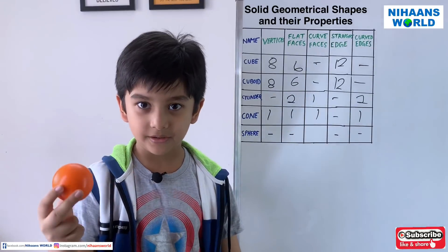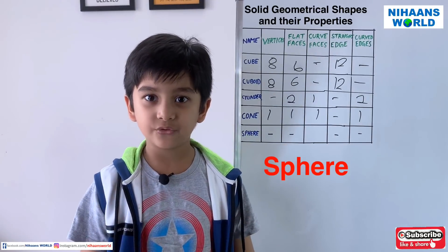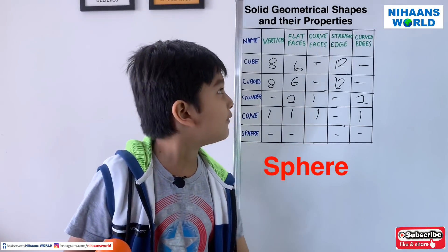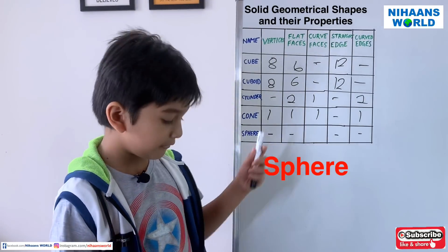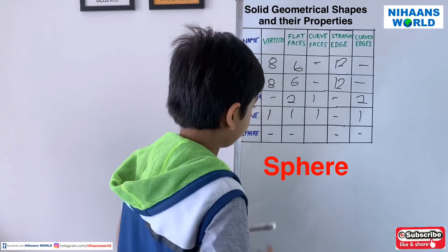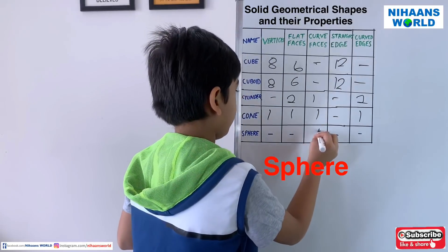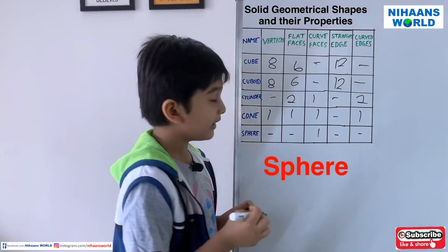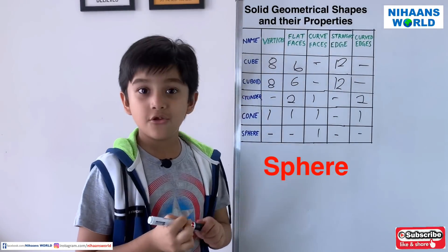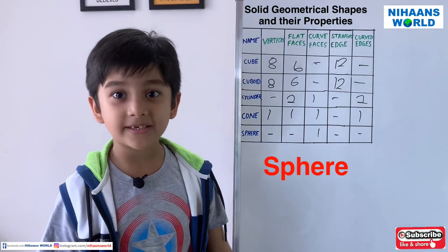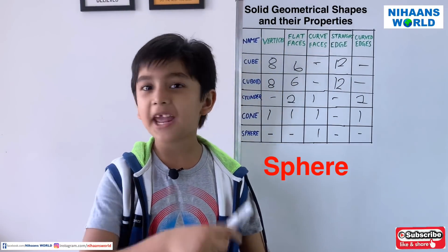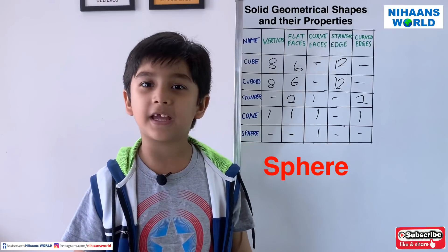This is a sphere. It has only 1 curved face, no vertex, no flat faces, and no edges.